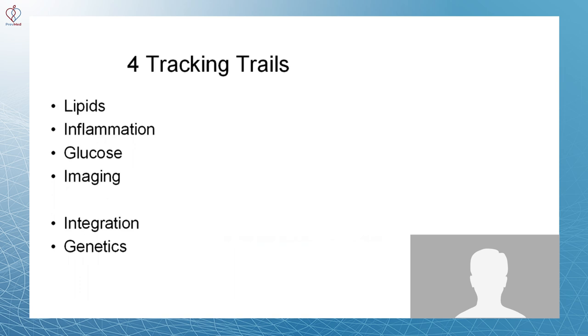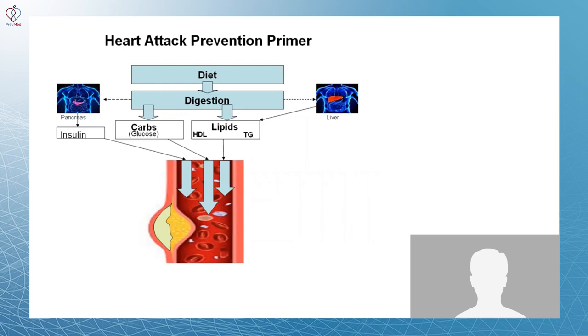They're lipids, inflammation, glucose, and imaging. I developed this pictorial of my system. It has to do with the pancreas and the liver and the interaction. And ultimately, what flows through your arteries. I try to differentiate between what flows through the arteries and the composition of that and the arterial wall. Because the arterial wall is ultimately where all the damage occurs.